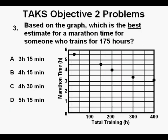Problem 3. Based on the graph, which is the best estimate for a marathon time for someone who trains for 175 hours? This problem is an estimating problem, which means that we have to be careful and be sure to think it through. We should know that since the problem calls for us to estimate that we will not get an exact answer, but we look for the best answer.